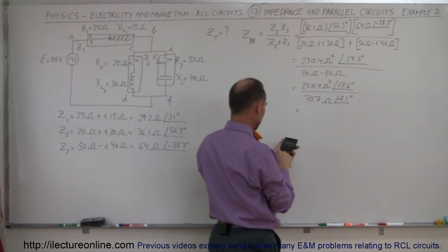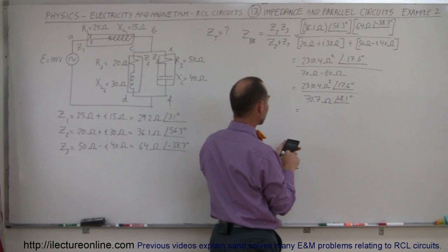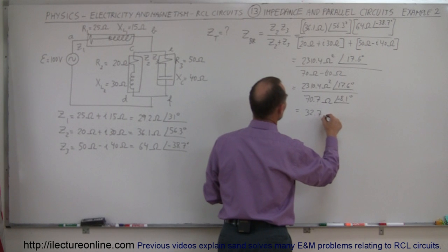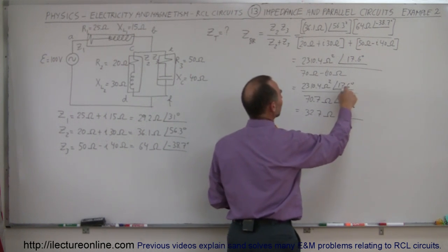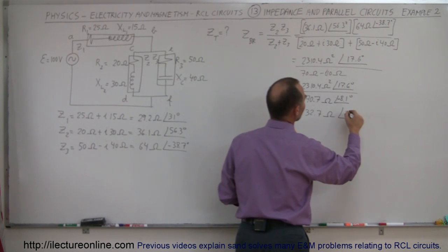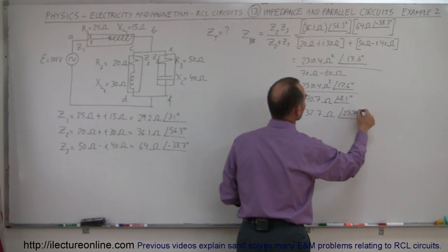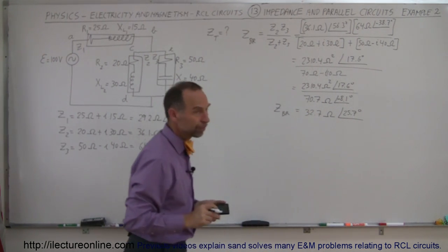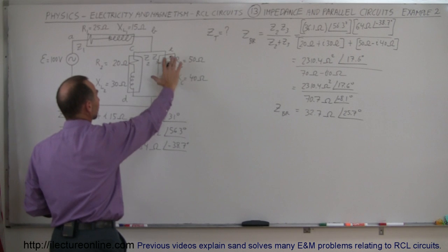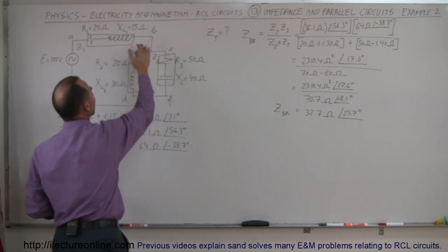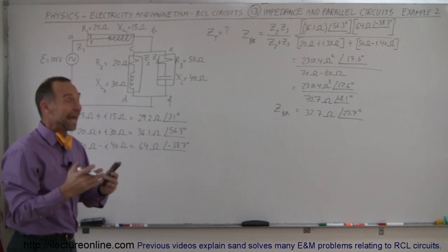Now we divide: 2310.4 divided by 70.7 gives 32.7 ohms. For the phase angle, since the denominator angle is negative we add: 17.6 plus 8.1 gives 25.7 degrees. So the impedance of the parallel branch is 32.7 ohms at a phase angle of 25.7 degrees.